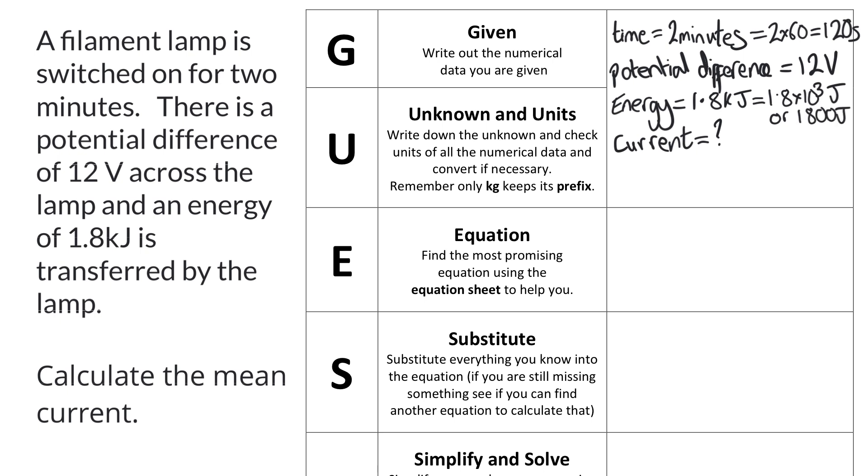The good news is that those unit conversions will have got me a method mark. The next step is to look for an equation that might help us to calculate the unknown of current. Now with a six marker, you're generally going to end up having to use two equations. Don't worry about that for the moment, but look for an equation which has got current in it and at least one of these other quantities. Often there's more than one route that you can take through. I found the equation power equals potential difference times current, which I've written in symbols.